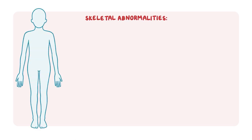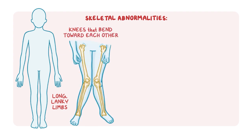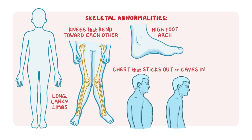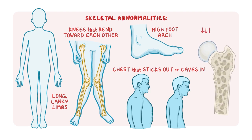Skeletal abnormalities also occur, with people affected by the condition characteristically having long, lanky limbs and knees that bend towards each other when standing up straight. The arch of the inside of the foot may be high, with the majority of the foot not touching the ground. The chest may also stick out more than usual or cave inward. Older individuals with CBS deficiency tend to experience a decrease in bone density, making it easier for their bones to fracture.